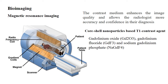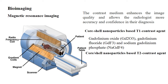One problem associated with gadolinium compounds is that they become toxic when in ionic form. Recently, various other contrast agents based on oxides and chlorides of iron and copper have been identified as alternatives to gadolinium compounds. Researchers have developed and engineered an oxide-based core-shell nanoparticle for use as an MRI contrast agent.